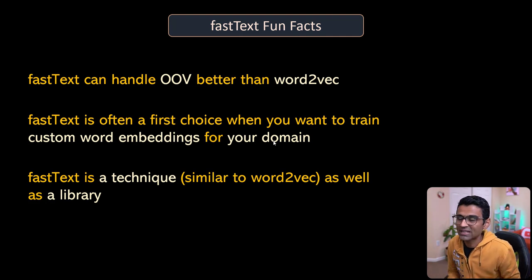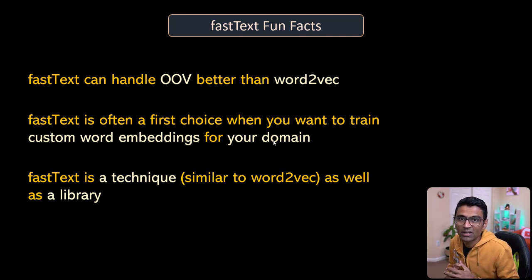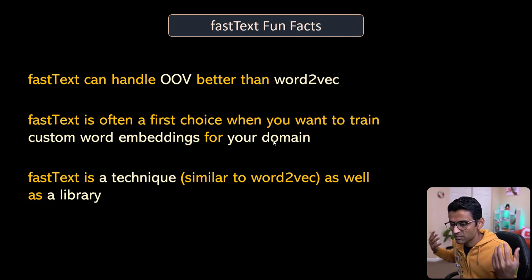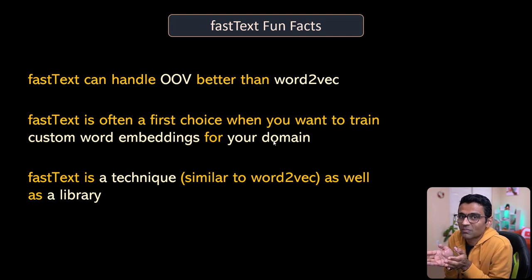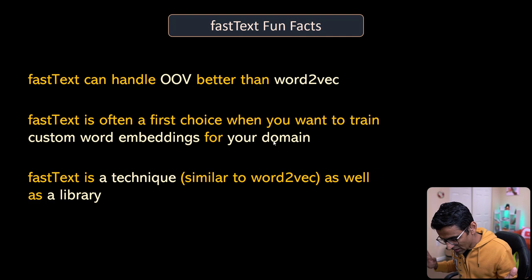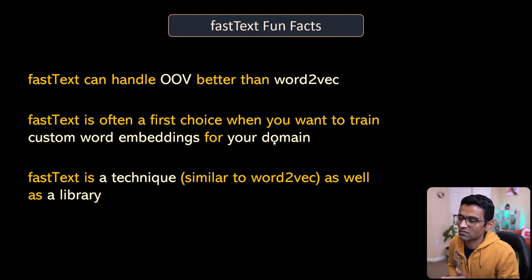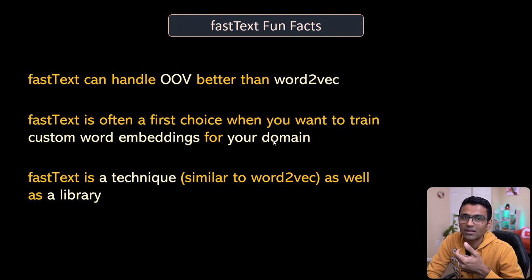When we wanted to solve a specific NLP problem using standard models such as BERT or Word2Vec trained on Wikipedia, it did not work because of the many pharma-specific terms. Using a generic Wikipedia model usually doesn't work, so you have to train your own custom model. Whenever you need to train your own custom model for your domain, the first choice as of 2022 is always FastText, because it is lightweight, fast, and requires fewer resources, giving you a solid baseline in your first attempt.